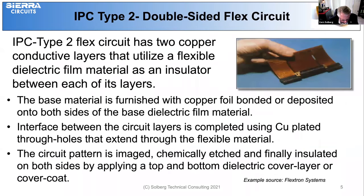In Type 2, the circuit has two copper conductive layers that utilize a flexible dielectric material as its insulator between each of the copper layers. The base material is furnished with copper foil bonded or deposited onto both sides of the base dielectric. Interface between the circuit layers is completed using copper plated through holes that extend through the flexible material. The circuit pattern is imaged, chemically etched, and finally insulated on both sides by applying a top or bottom dielectric cover layer or cover coat.